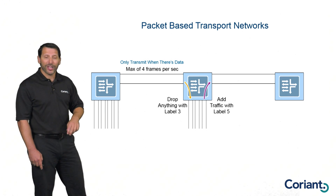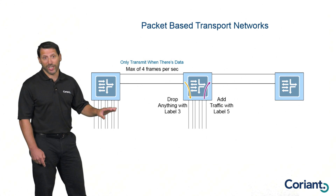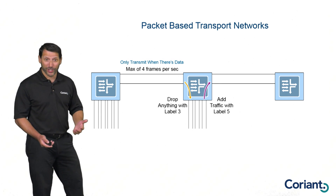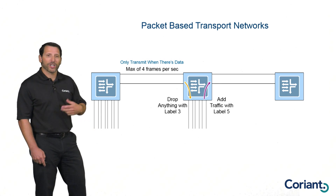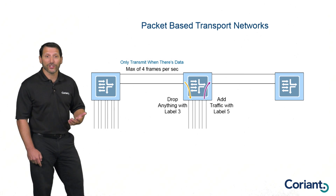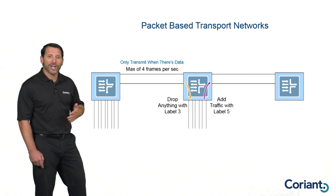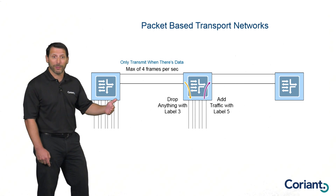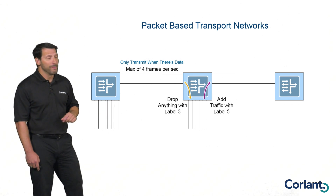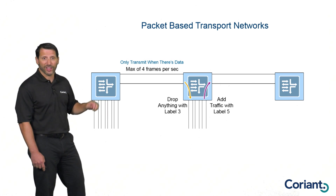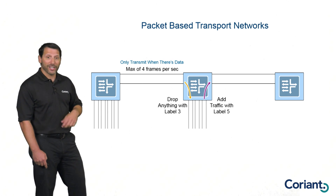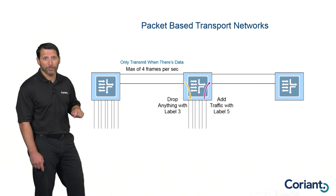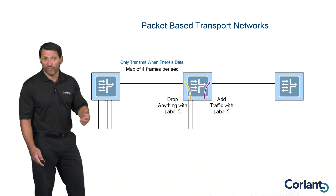Packet-based networks don't have the inherent reliability that circuit-based networks have, because circuit-based networks transmit frames at very regular intervals, giving them inherent reliability and many operational features. With packet-based networks, there's been a lot of evolution over the years to integrate that functionality, since you don't get it inherently. There's now a whole host of protocols developed to ensure that packet-based networks can achieve the same level of reliability — and in some cases, even better reliability than circuit-based networks. That was a historical issue, but I think the industry has well overcome those challenges.